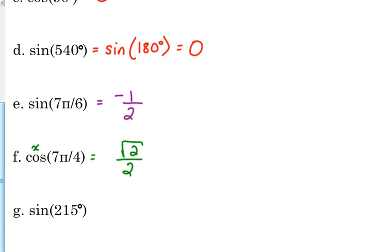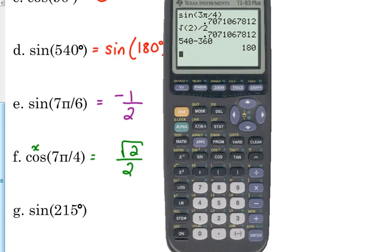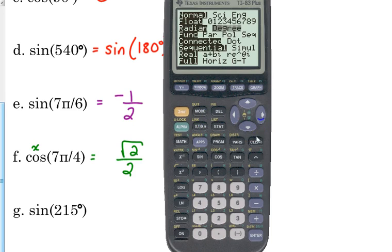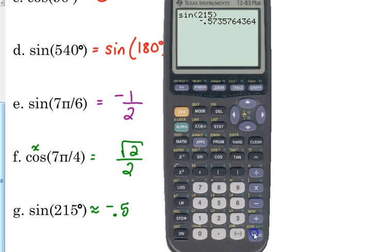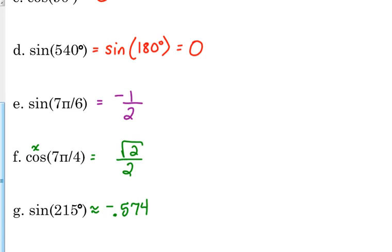How about the last one? Is 215 degrees on the unit circle? No. If you come across one like that, then you just make sure your calculator is in the right mode and you just type it in. If the angle is not on the unit circle, then you just type it into your calculator. I had to change my mode to degrees because I was in radians. So this is approximately negative 0.574. Every once in a while you'll come across one like that. Just use your calculator.